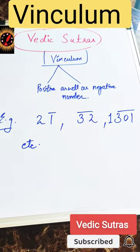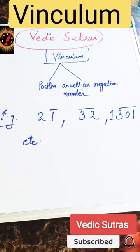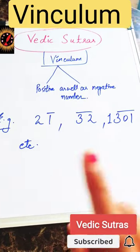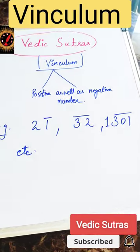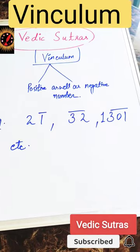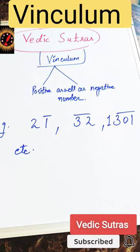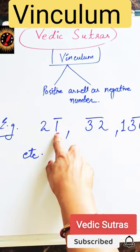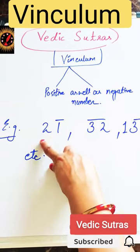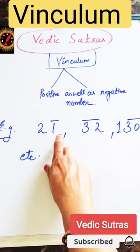Vinculum is one in which we have both positive as well as negative numbers. For example, 2-1-bar, 3-2-hole-bar, 1-3-0-1-bar, etc. So basically, we represent these numbers using horizontal lines, in which we have a bar number — we will call it 2-1-bar.